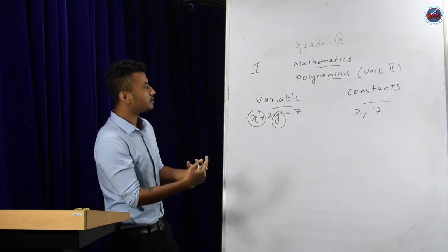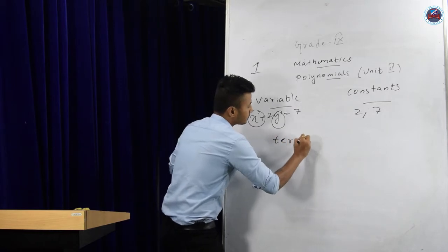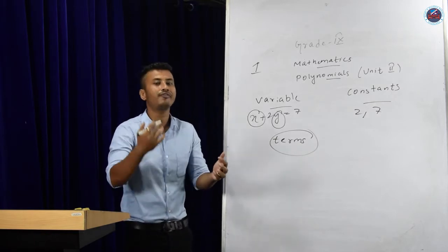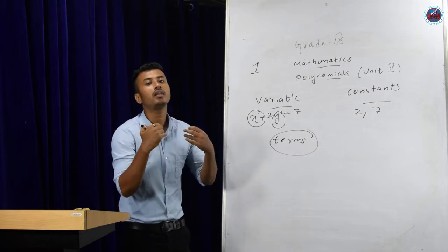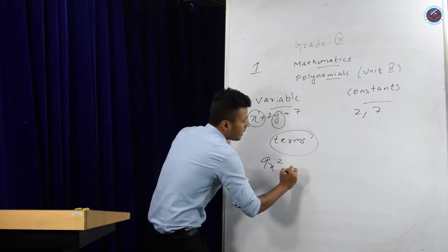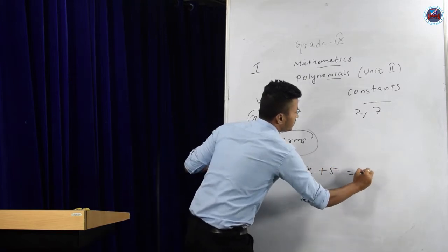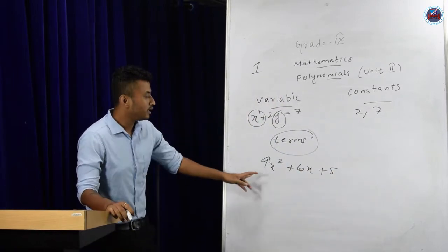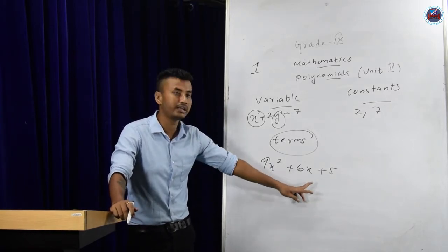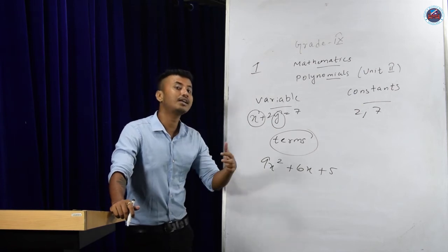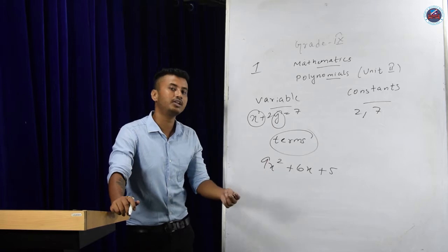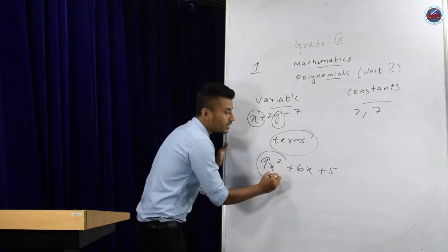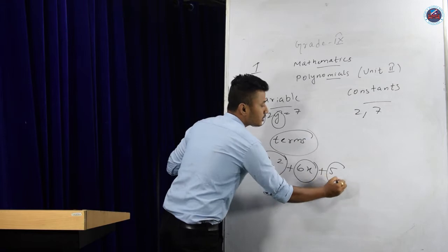Next comes the word 'terms.' What do you understand by term? Terms are nothing but a combination of a variable and a constant. For example, 9x squared plus 6x plus 5 equals 0. This is an expression. The variable here is x — it appears in all three parts. What are the terms? As I said, terms are a combination of variable and constant. So here there are three terms: 9x², 6x, and 5.